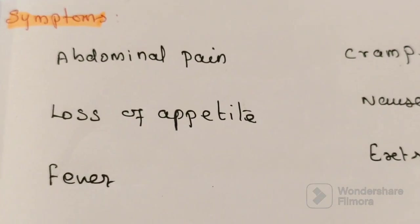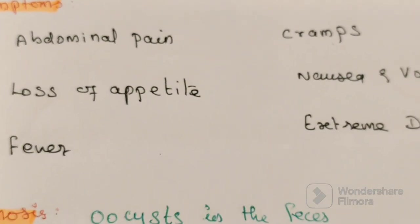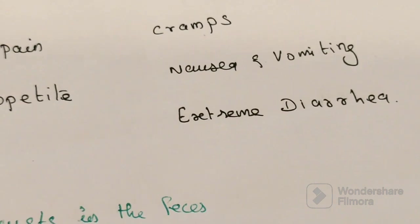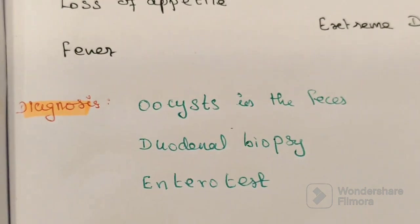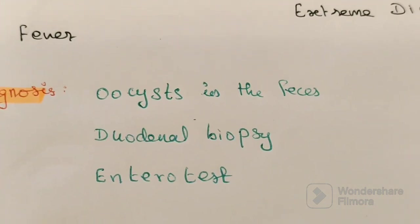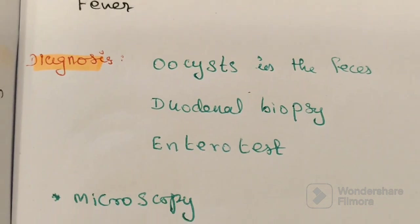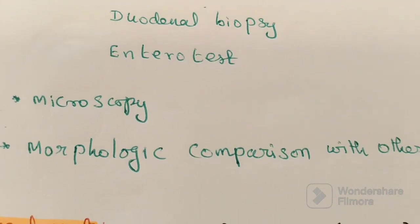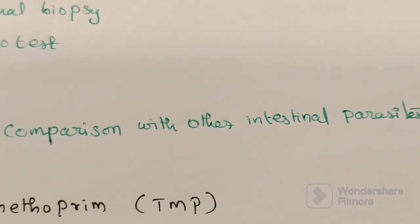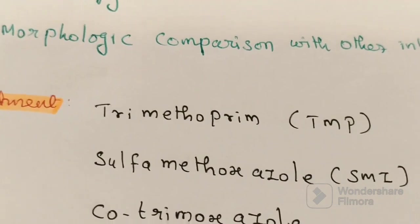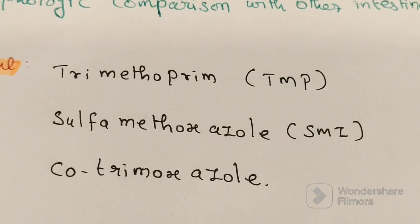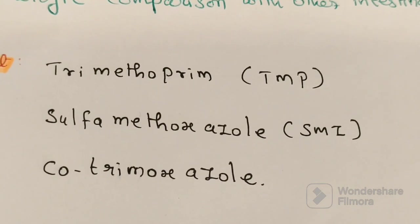Symptoms caused include abdominal pain, loss of appetite, fever, cramps, nausea, vomiting, and extreme diarrhea. For diagnosis: oocysts in fecal material, intestinal biopsy, Entero-test, microscopy, and morphological comparison with other intestinal parasites. For treatment, trimethoprim, sulfamethoxazole, and co-trimoxazole are used.